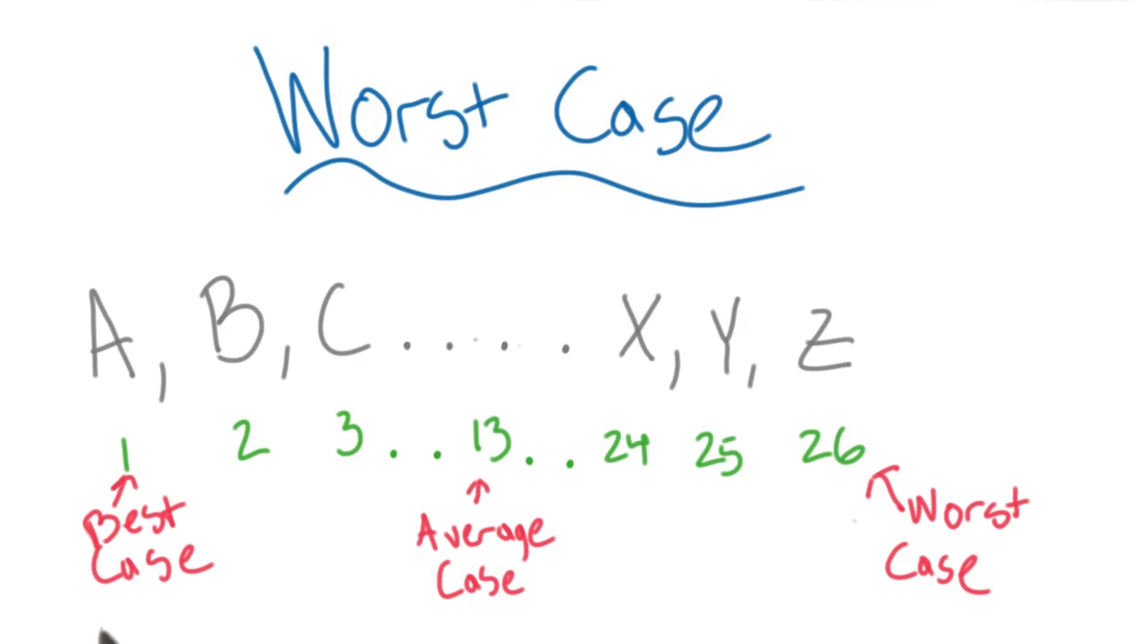However, the best case would be that we find what we're looking for on the very first try. But on average, we're going to fall somewhere in the middle, around 13.